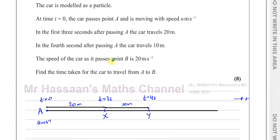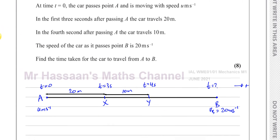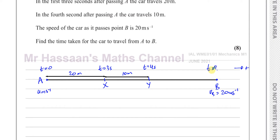The speed of the car as it passes point B is 20 meters per second, and we need to find the time taken to travel from A to B. Point B must be further along — we don't know where it is — and we don't know the distance to B either. That's all the information we have.